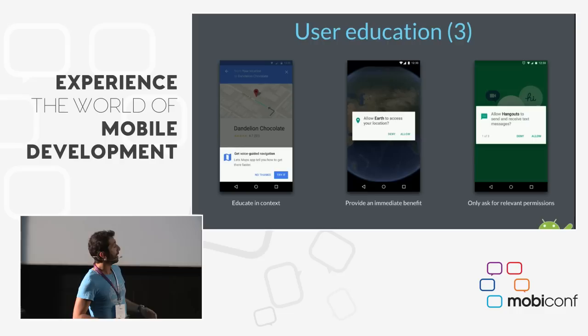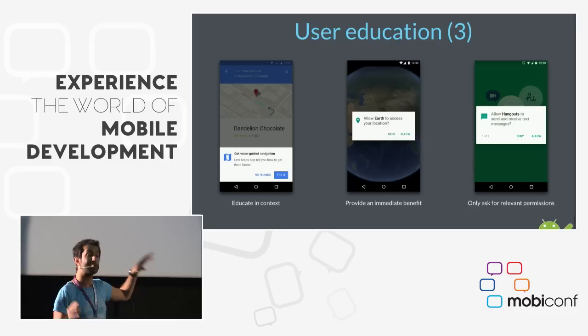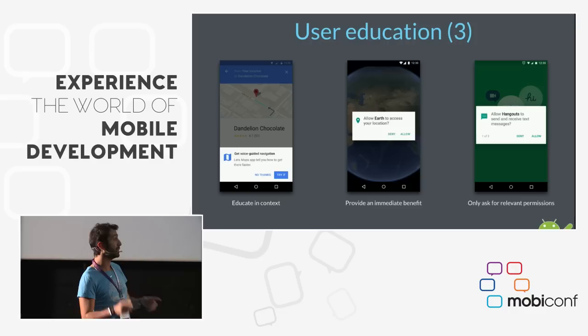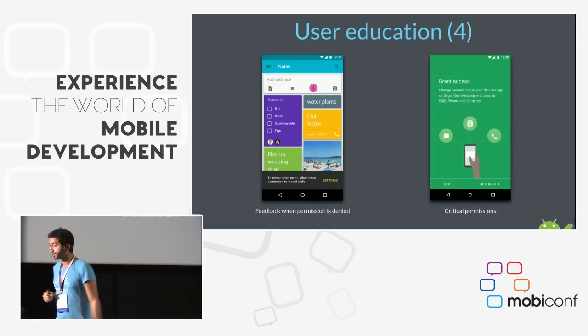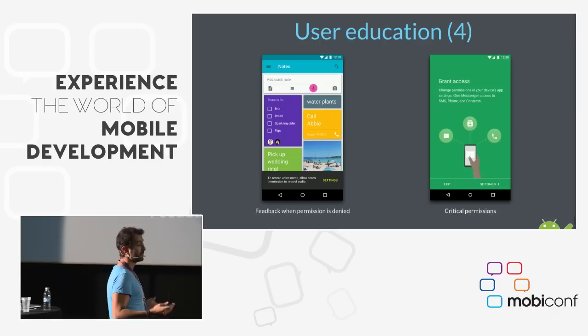'Only ask for relevant permissions.' Google Hangouts needs three specific permissions. If it doesn't have them, it won't work, so the first time Hangouts runs it asks just for those three. It's not going to ask for camera upfront even though you can take photos in Hangouts — it will ask for camera later, only if the user uses that functionality.